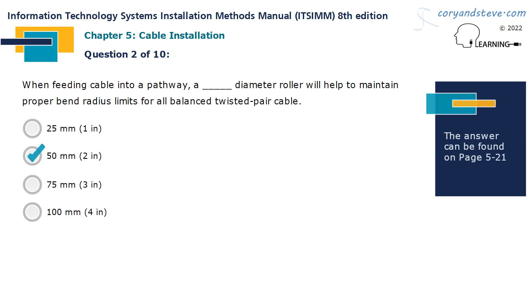When feeding cable into a pathway, a 50mm, or 2-inch, diameter roller will help to maintain proper bend radius limits for all balanced twisted pair cable.